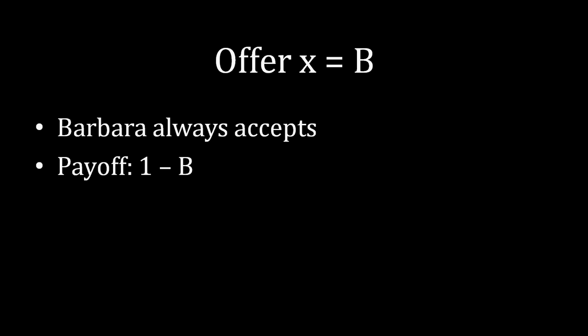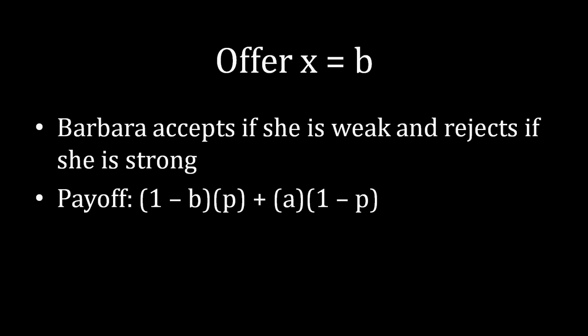Well, let's play around with this a little bit. What is your payoff if you're Albert for offering uppercase B? Well, we know that Barbara always accepts, and so your payoff is just going to be the remainder, how much of the deal that you're getting, which is going to be 1 minus uppercase B. And if you offer lowercase b, we know that Barbara is going to accept if she is weak and reject if she's strong. So in the first case, she's weak. That occurs with probability p, and Albert receives the remainder of the deal in that case, which is 1 minus b.